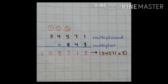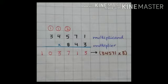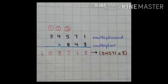Now aap next place pe move kareenge. 7 times 3 is 21. So 21 is 2 digits — hum ek saath write nahi kar sakte. So 1 ko aap neeche write kareenge and 2 as a carry write kareenge 100 place pe. So now aap next place pe move kareenge: 5 times 3 is 15, but aap carry pe add kareenge. So 15 plus 2 is 17. So 7 ko neeche write kareenge and 1 as a carry write kareenge 1000 place pe.